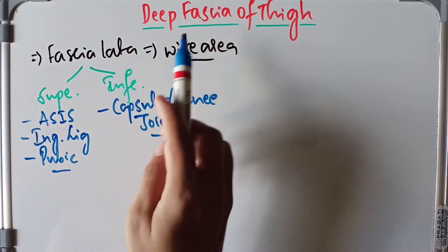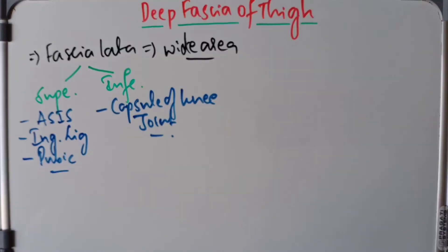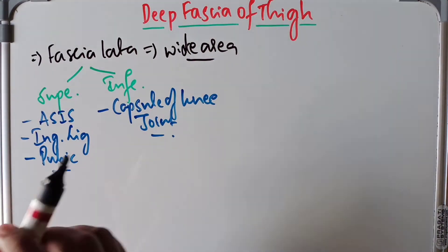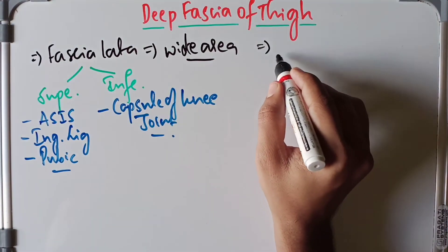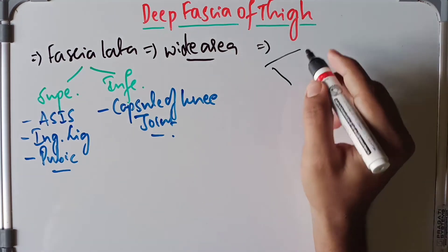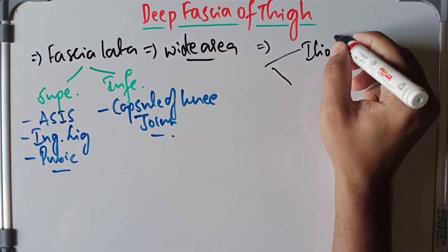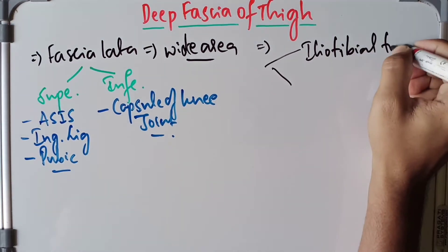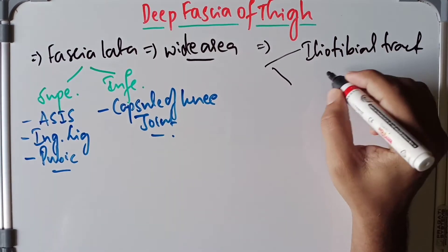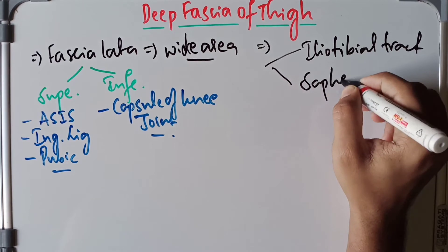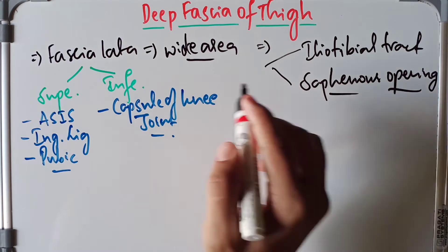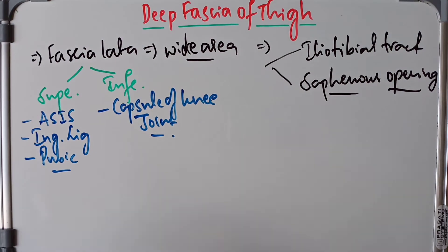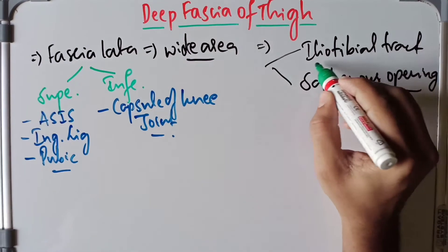So those are the attachments of the fascia lata — the deep fascia of the thigh — superiorly and inferiorly. Now we are also going to learn about the modifications of the fascia. The fascia lata is modified into two aspects: the iliotibial tract and the saphenous opening.